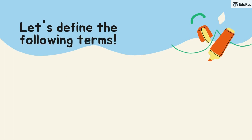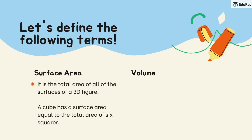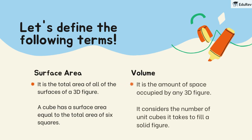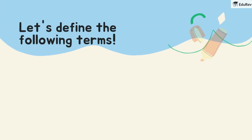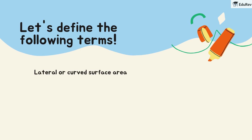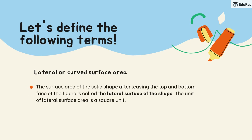Now, let's define two important terms: surface area and volume. Surface area is the total area of all the surfaces of a 3D figure. For example, a cube has a surface area equal to the total area of its six square faces. Volume is the amount of space occupied by a 3D figure — it's like imagining how many small cubes it would take to fill up the solid figure. Another term we need to know is lateral or curved surface area. This is the surface area of the solid shape after leaving out the top and bottom faces. It's measured in square units.